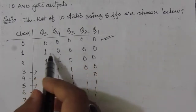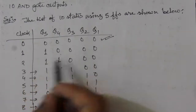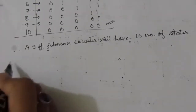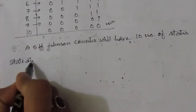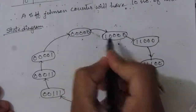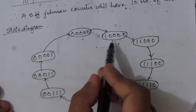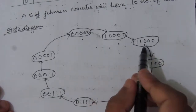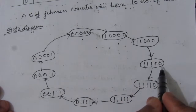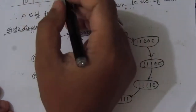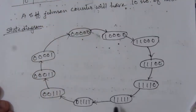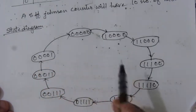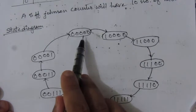The sequence of 2n states goes: 00000 → 10000 → 11000 → 11100, and so on. We can draw a state diagram showing these transitions. The state diagram confirms that from 00000 the counter visits 10 distinct states before cycling back, giving 10 total states.